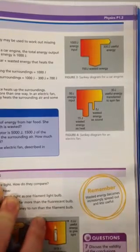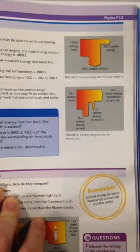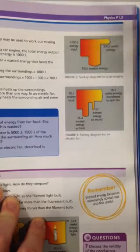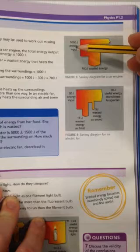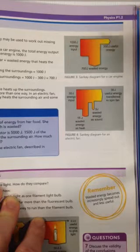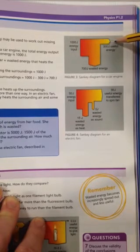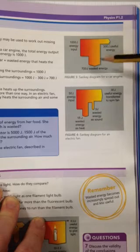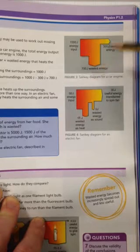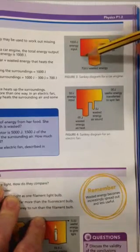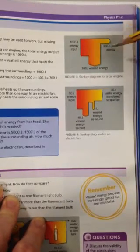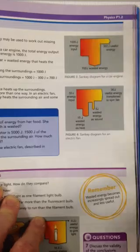Alright, people, Sankey diagrams. The Sankey diagram is basically a posh energy transfer diagram. You can see it's set up as an arrow pointing from left to right. You have the input energy coming in the left-hand side, the useful output energy coming out the right-hand side. Any wasted energy will be pointing downwards. The important thing about Sankey diagrams is they are drawn to scale. You can see here it is the width of the arrows that represents the amount of energy in each case.